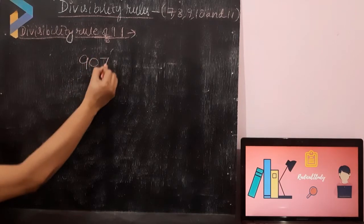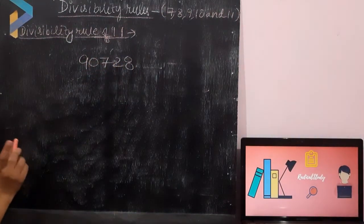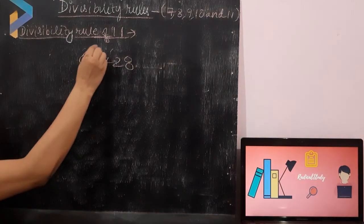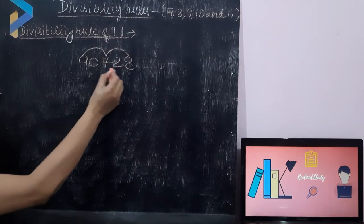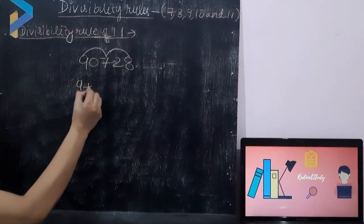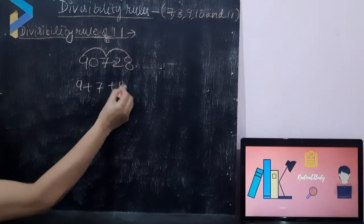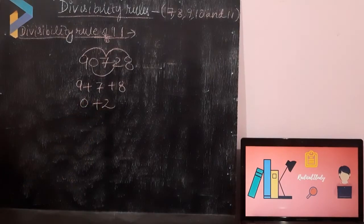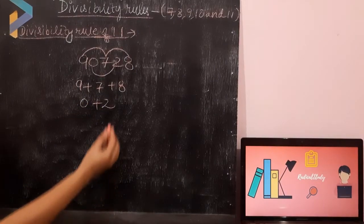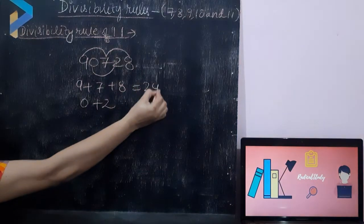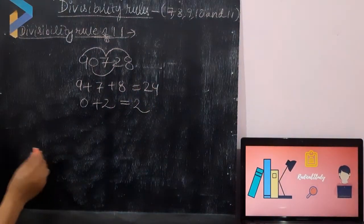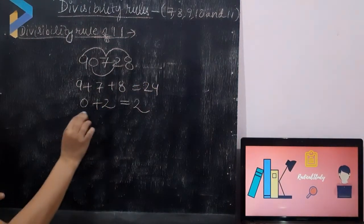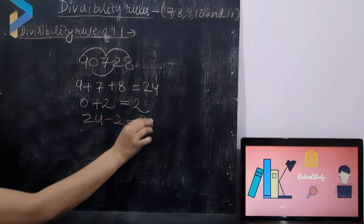Let me take one example. You have to add the numbers at even places and at odd places. The odd places are positions 1, 3, 5 — add those digits: 9 plus 7 plus 8. The even places are positions 2 and 4 — add those digits: 0 plus 2. So 9 plus 8 plus 7 equals 24, and 0 plus 2 equals 2. Now subtract: 24 minus 2 equals 22.